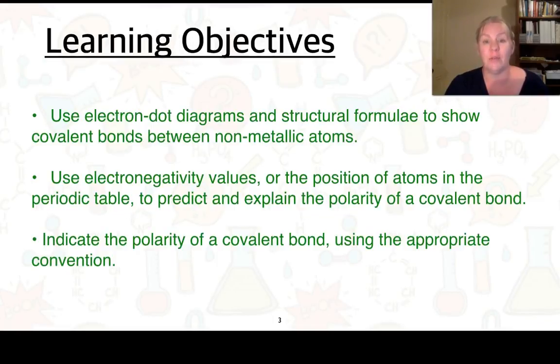The learning objectives that you'll need to know by the end of these videos is that you'll need to be able to use electron dot diagrams and structural formulae to show covalent bonds between non-metallic atoms. You'll need to be able to use electronegativity values or the position of the atoms in the periodic table to predict and explain the polarity of a covalent bond, as well as indicating the polarity of a covalent bond using the appropriate convention.